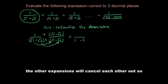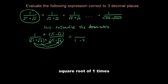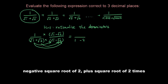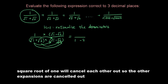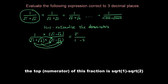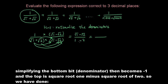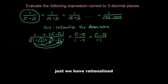The other expansions cancel each other out — square root of 1 times negative square root of 2, plus square root of 2 times square root of 1, will cancel each other out. The top of this fraction is square root of 1 minus square root of 2. Simplifying the bottom gives negative 1, so we have rationalized the first fraction.